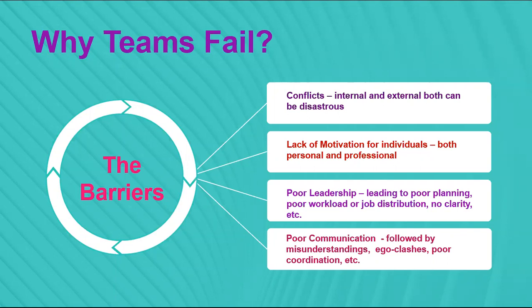Poor communication causes misunderstandings, ego clashes, poor coordination, and so on. Misunderstandings tend to hamper team spirit. Ego clashes arise because human beings are proud — if anyone tells us we are wrong, we get offended. Poor coordination is something already discussed. These are the barriers of teamwork.